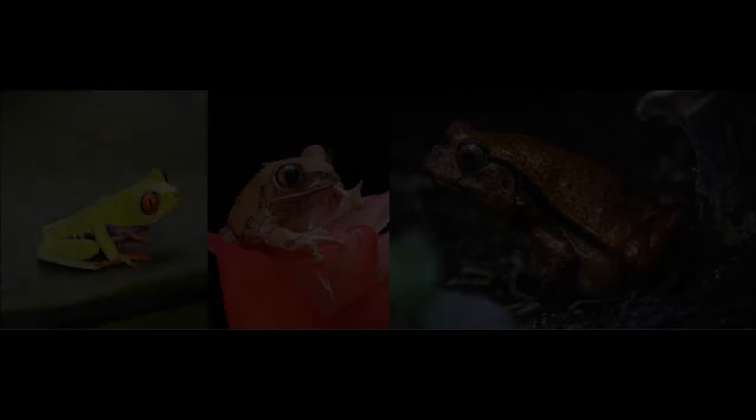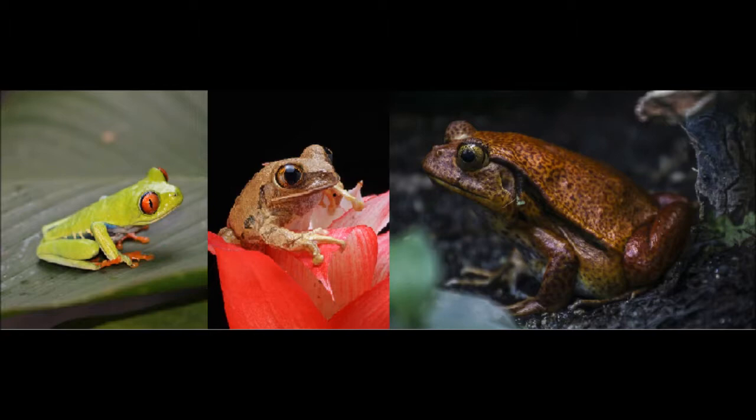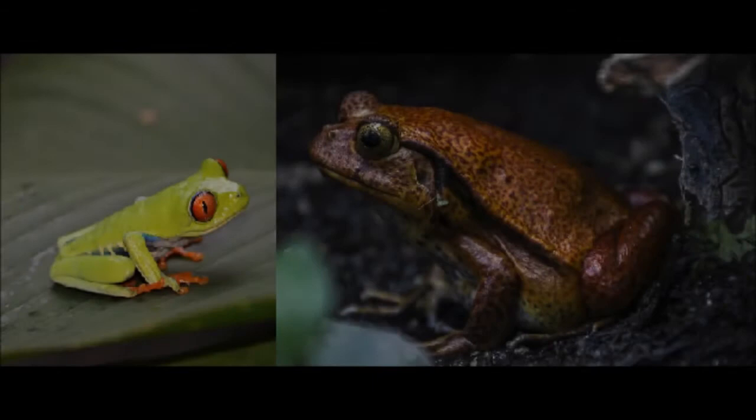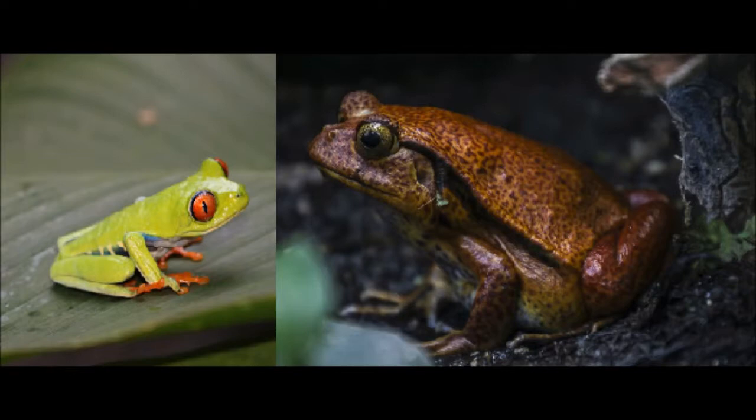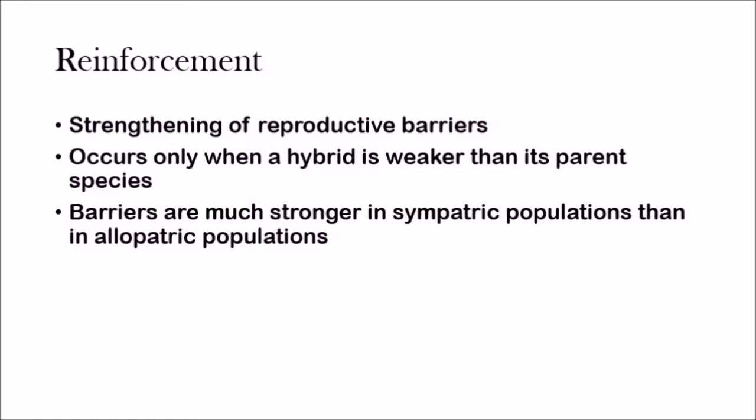Reinforcement occurs usually when a hybrid is weaker than its parent species — when natural selection selects the parent species over the hybrid species. Because of that, the hybrid species are not going to be able to exist; natural selection will separate the parent species again and the hybrid species will just be left out. This type of reinforcement typically happens in sympatric populations rather than allopatric populations. Sympatric populations are species separated not by location but by something else, while allopatric populations are separated by location.